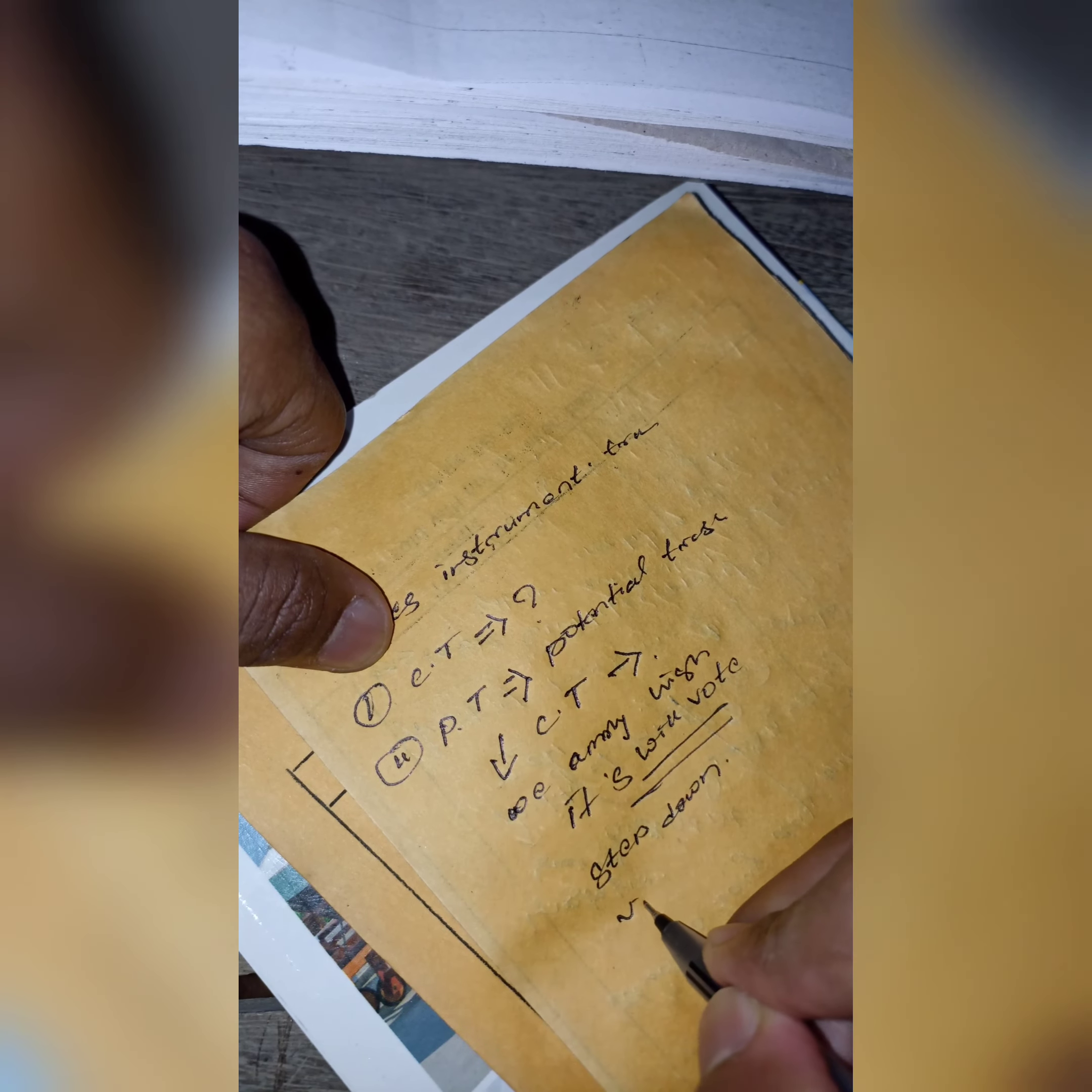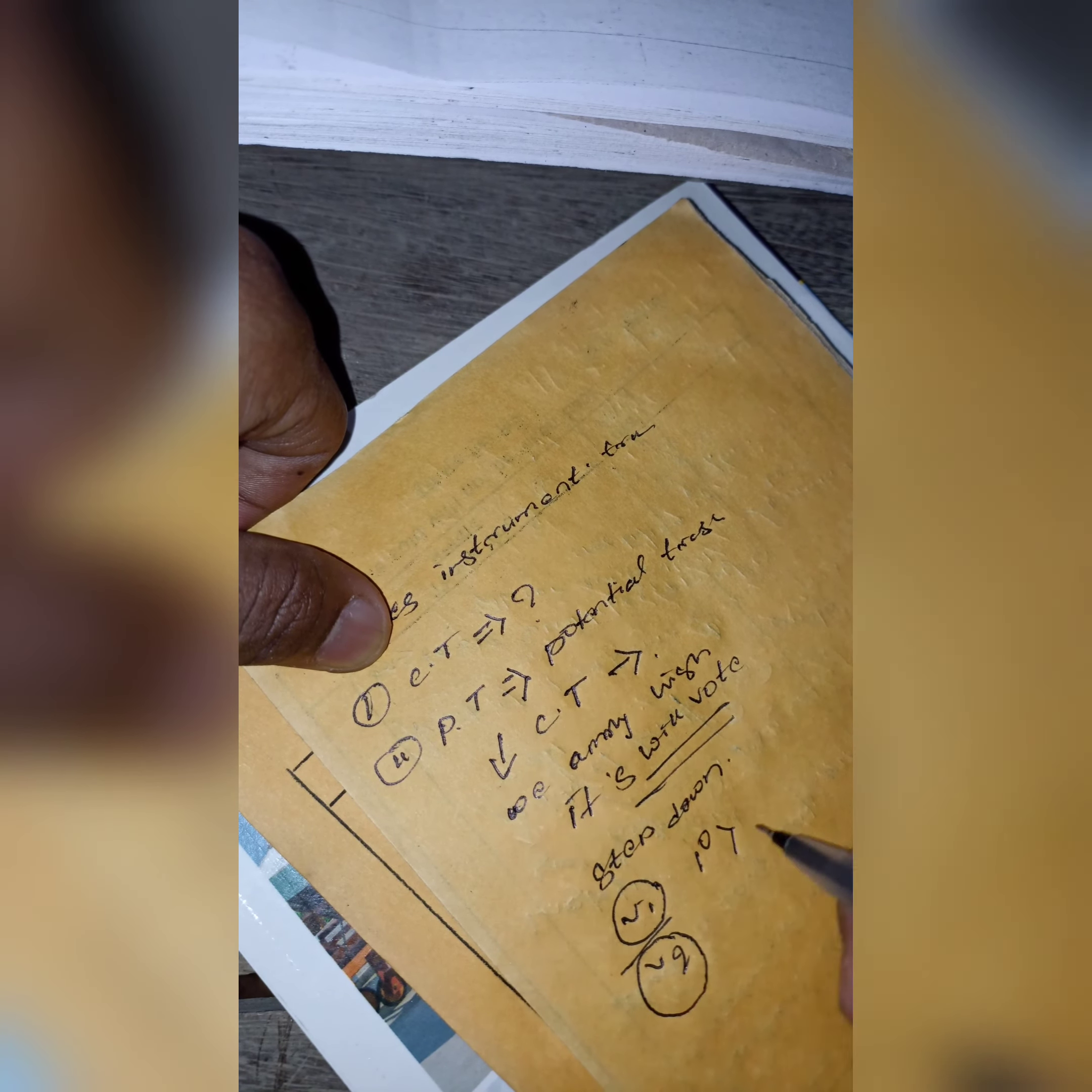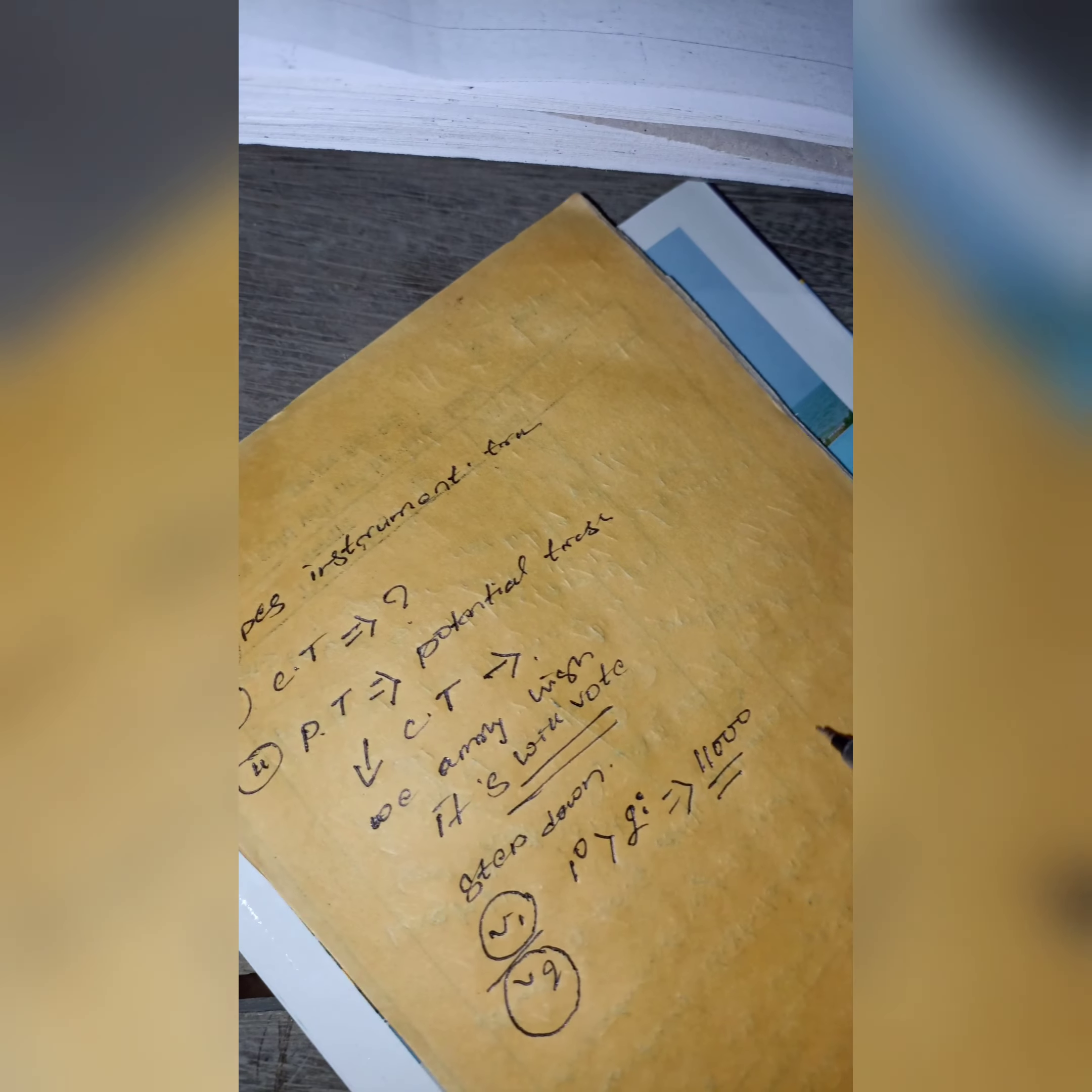I will show you how. Suppose V1 and V2, this is your primary voltage and this is your secondary voltage, meaning primary voltage is greater than secondary voltage. This is your high voltage.